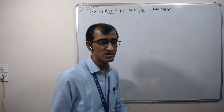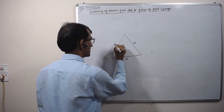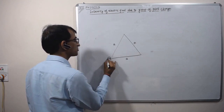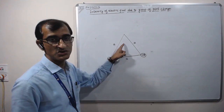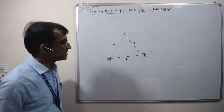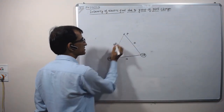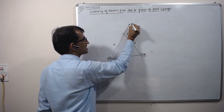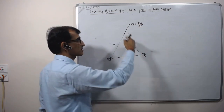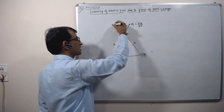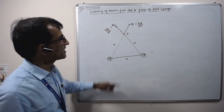A simple problem based on this concept: consider an equilateral triangle of side a, and two positive charges each of magnitude plus q are placed on two corners of the triangle. Find out the resultant intensity of electric field at the third corner P. The intensity at P will be due to these two charges. Due to plus q in the outward direction, that is e1, the magnitude will be kq upon a². Due to the other charge, along the line joining in the outward direction, that is e2, the magnitude is also kq upon a².